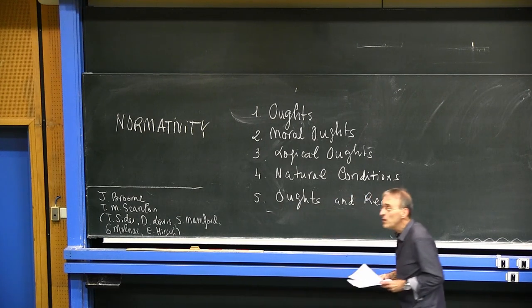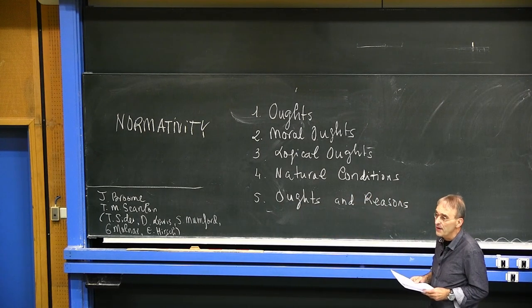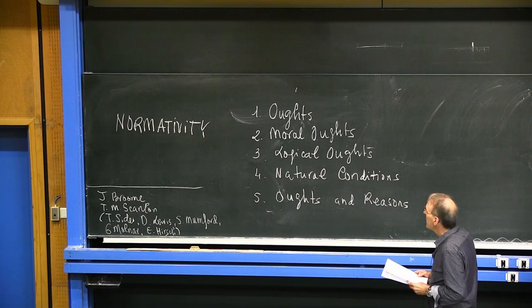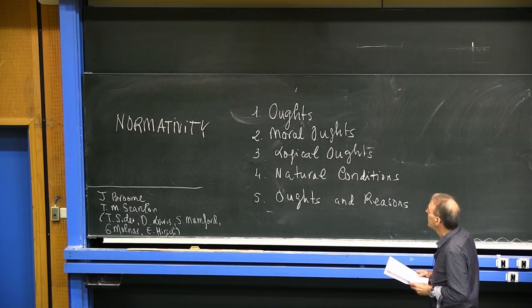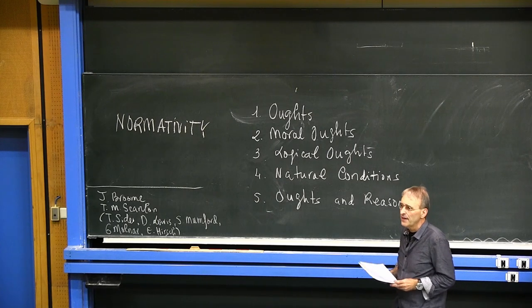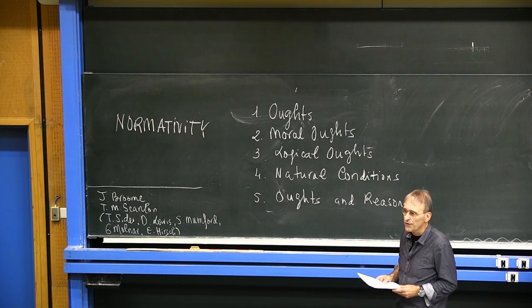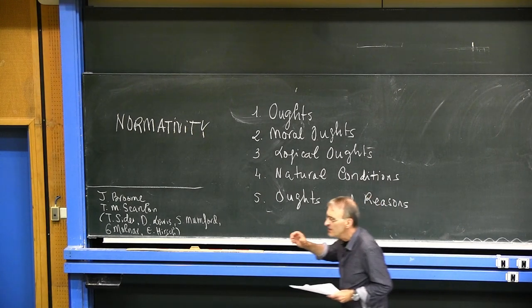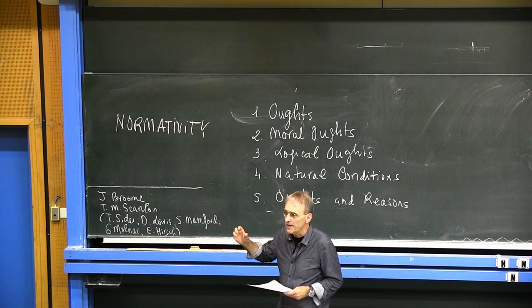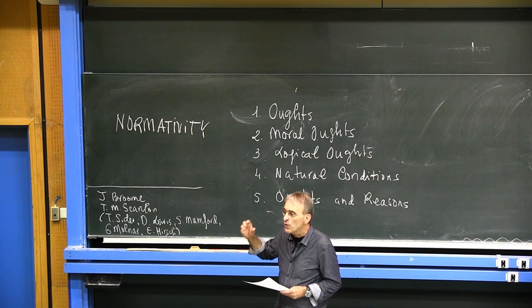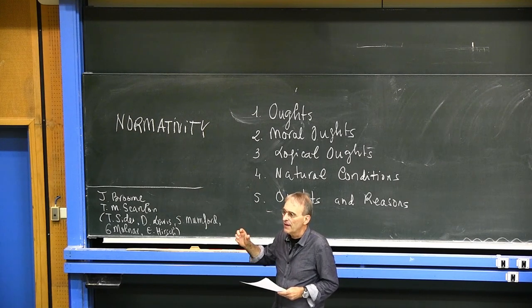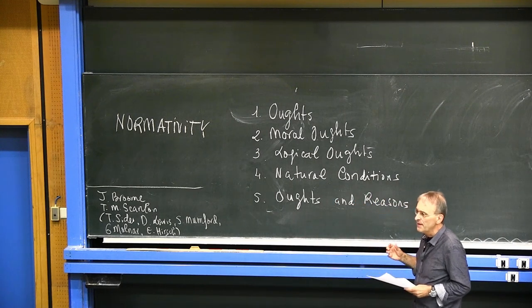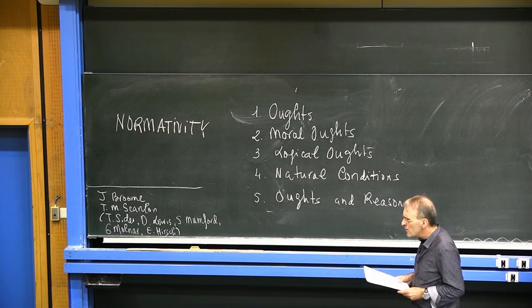For Immanuel Kant and the deontological moral philosophers, moral oughts are always categorical oughts. When reason determines the will, then is the will a good will in a moral sense, and what reason commands has a categorical validity that cannot be relativized.